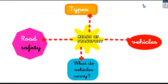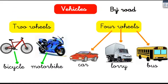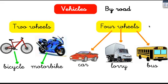Let's see some means of transport in detail. By road, you can use two-wheeled vehicles like the bicycle and the motorbike, and with four wheels or more we have the cars, the lorry, and the buses. All these vehicles travel by road and they use petrol — except the bicycle. All these other machines use petrol, so yes, they pollute.